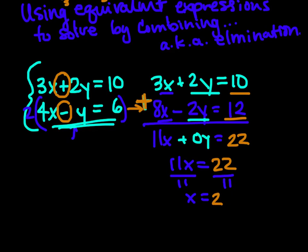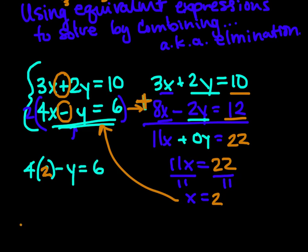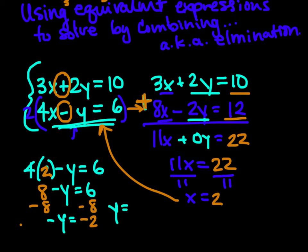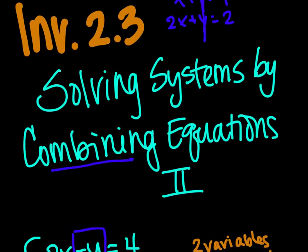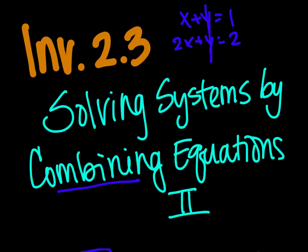From there, I can put x equals 2 into one of the original expressions. I'll use the second equation — 4x minus y equals 6 — since it has a single y term. So 4 times 2 minus y equals 6, giving 8 minus y equals 6. Subtracting 8 from both sides: negative y equals negative 2, so y equals 2. My final coordinates are (2, 2) — that's where these equations intersect. Play around with this concept of combining or eliminating a variable to find the answer in a system of equations. If you have any questions, please ask. Thanks for watching.